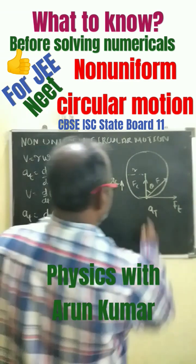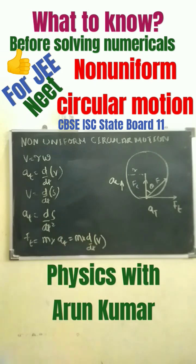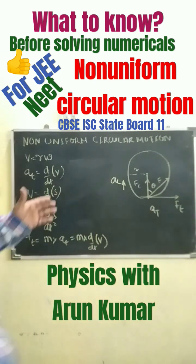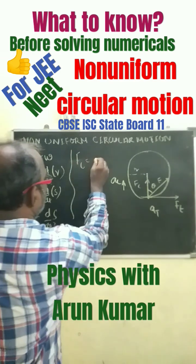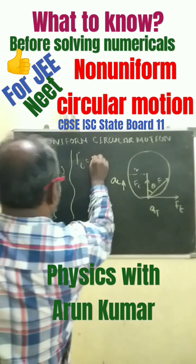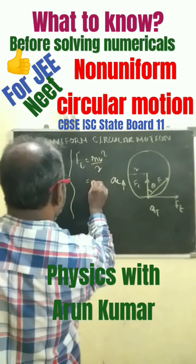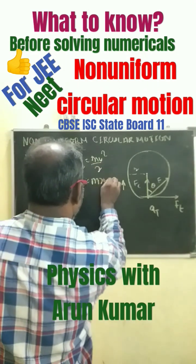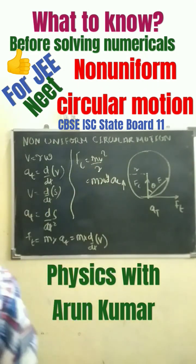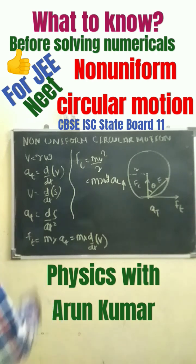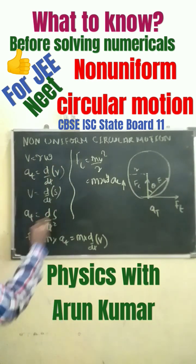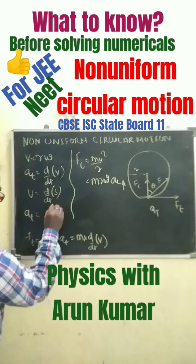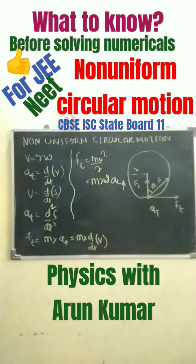We also have centripetal force. The centripetal force F_c equals mv²/r, which equals mrω². Note: the earlier expression should be corrected to d²s/dt².